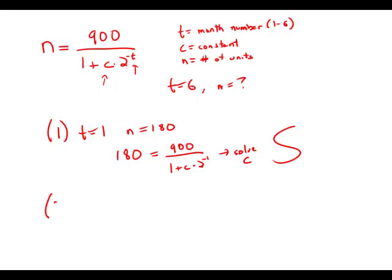So, forget about that. Statement number 2, all by itself, tells us that in month number 2, T equals 2, the company is scheduled to produce 300 units of the product. So, N equals 300. Well, again, we can plug these into the equation. 300 equals 900 over 1 plus C times 2 to the negative 2.